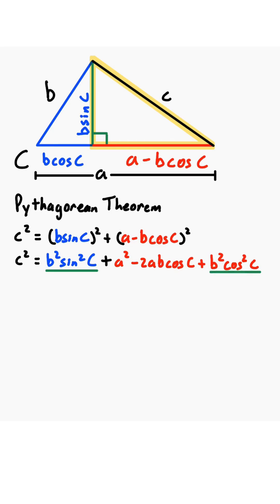Now we notice there's a B squared sine squared of C and a B squared cosine squared of C, so we factor out a B squared, leaving a sine squared of C plus cosine squared of C. We'll put everything else back in. Now we notice that since sine squared of C plus cosine squared of C is a Pythagorean identity,